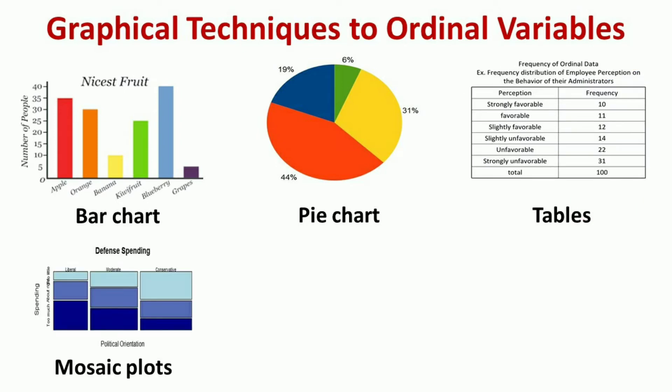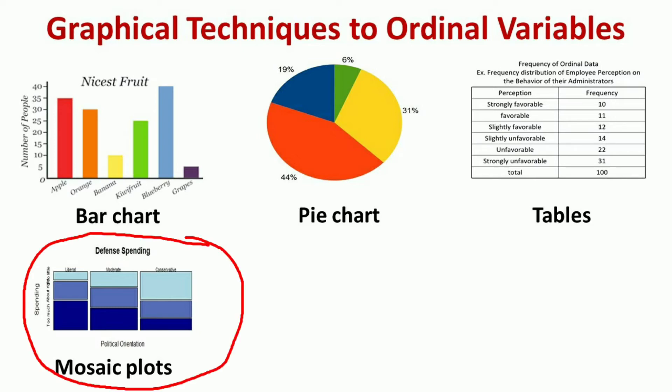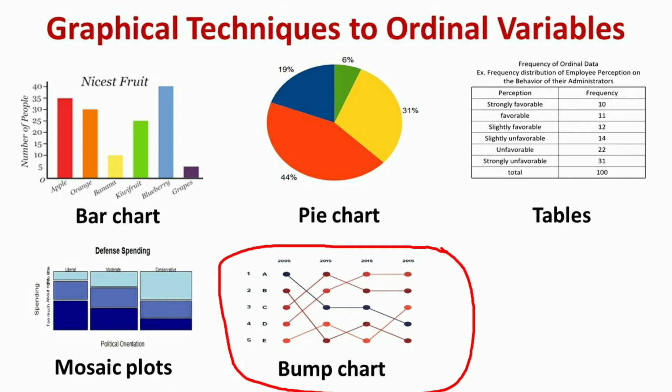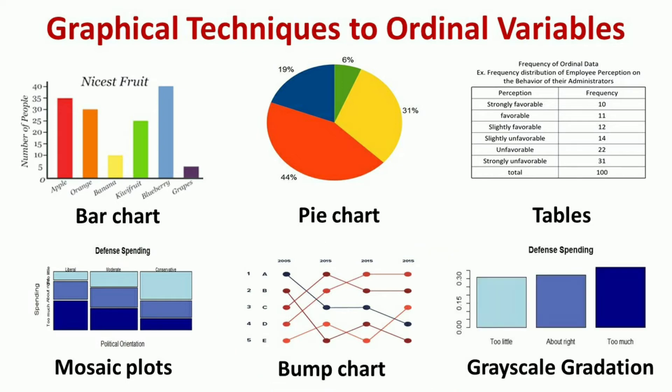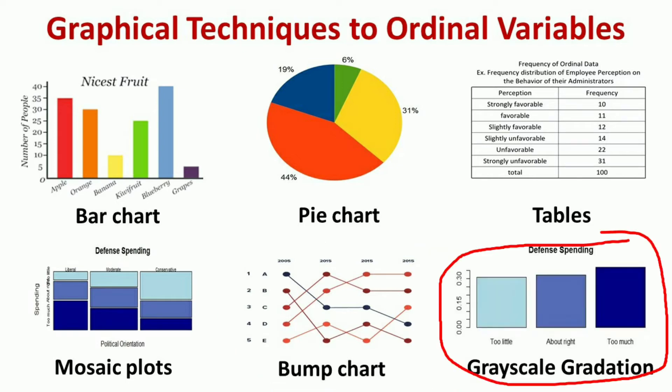Another graphical technique to analyze ordinal data is mosaic plots, which can be useful to show the relationship between ordinal variables. The next one is the bump chart. The bump chart is a line chart which is appropriate for ordinal data, showing the relative ranking of items from one time point to the next. Lastly, color or grayscale gradation can be used to represent the ordered nature of the data.